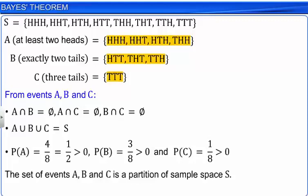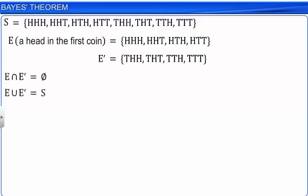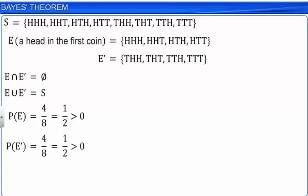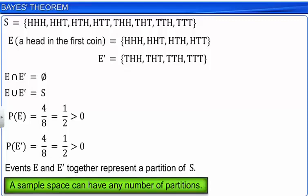Again, let's consider another event E of sample space S, defined as getting a head in the first coin. The complement of event E is E' as shown. We know that an event and its complement are always disjoint, and their union is equal to the same sample space. Since events are non-empty, the probabilities of events E and E' are also greater than zero. This shows that events E and its complement together represent another partition of sample space S. Likewise, we can have any number of partitions of a sample space.